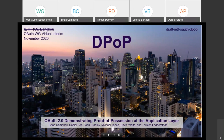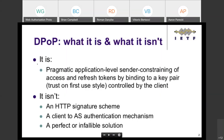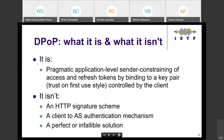Does everyone see the slides okay? So we are not meeting in Bangkok, but I love to keep some photos around. We should have been in Bangkok, but instead we're having this virtual interim meeting to discuss DPoP. What is DPoP and what isn't it? It's a pragmatic application-level sender-constraining of access and refresh tokens for OAuth, done by binding a key pair in a trust-on-first-use style controlled by the client to tokens. It's not an HTTP signature scheme, not a new client-to-AS authentication mechanism, and certainly not perfect — it has its warts, but it is useful and pragmatic.